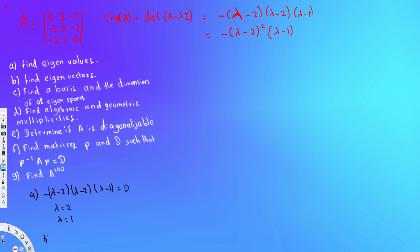The second question asks for eigenvectors. To find them we need to compute the null space of A minus lambda I for each eigenvalue. For a three by three matrix, the identity matrix scaled by lambda gives lambda on the diagonal and zeros elsewhere, so A minus lambda I subtracts lambda from each diagonal entry of A.